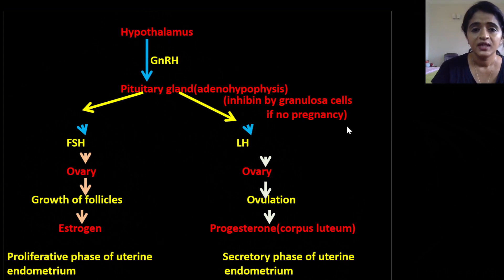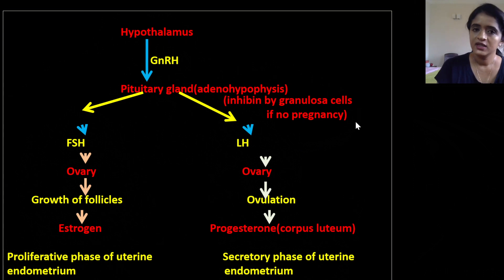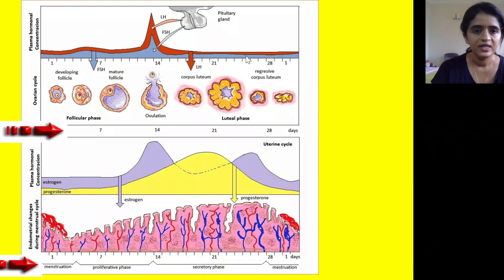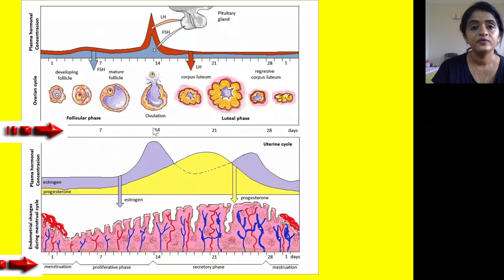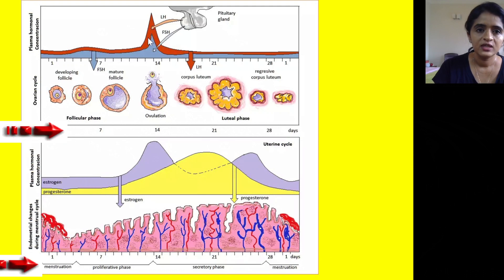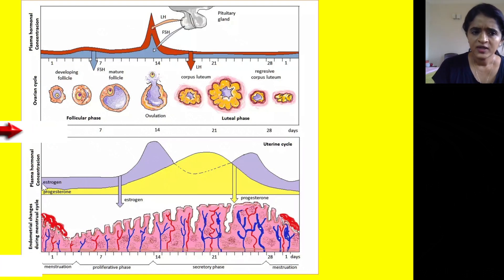The luteal phase ends due to inhibin, which is secreted by granulosa cells. If there is no pregnancy, inhibin acts on the adenohypophysis, suppressing FSH and LH, leading to menstruation. The ovarian cycle is divided into the first half — the follicular phase with maturation of follicles culminating in ovulation — and the second half, the luteal phase, with formation of corpus luteum. Just before ovulation, there is a peak of LH and FSH known as the LH surge.